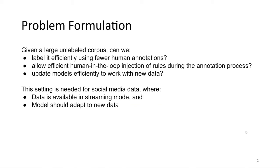So what is the problem? Oftentimes we are given a large unlabeled corpus or a large stream of data. Our goal is: can we label this data efficiently using fewer human annotations? Can we allow efficient human-in-the-loop injection of rules during the annotation process? Or can we update the models efficiently once this new data set is generated so this loop is continuous? This setting is very prominent when working with social media data, where the data is available in streaming mode and the models are expected to adapt in an online fashion.